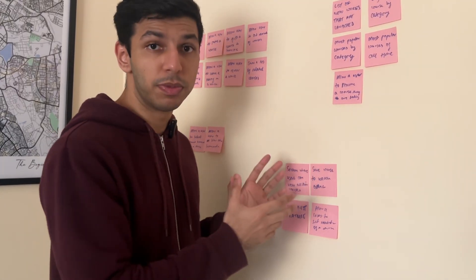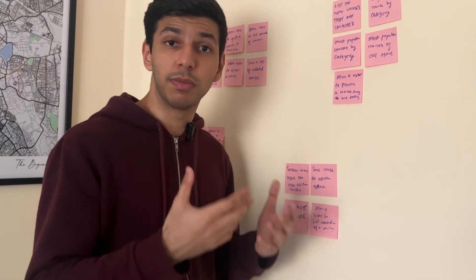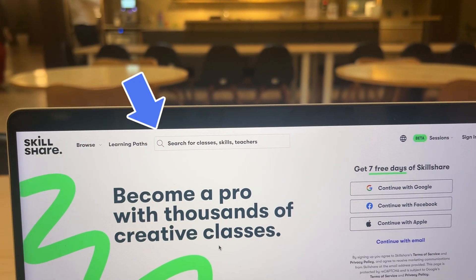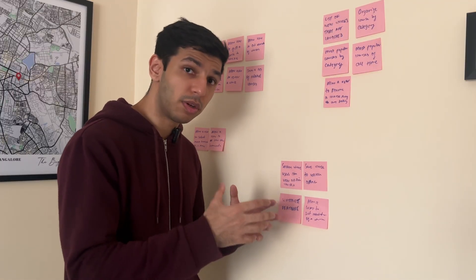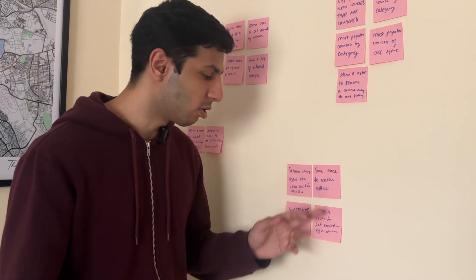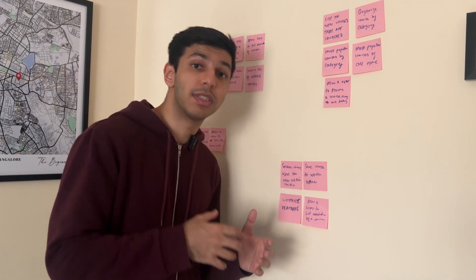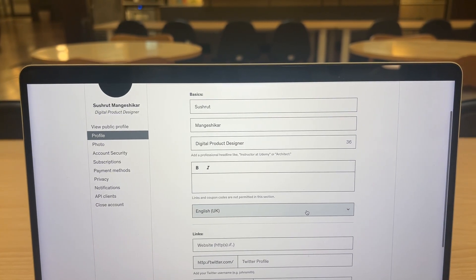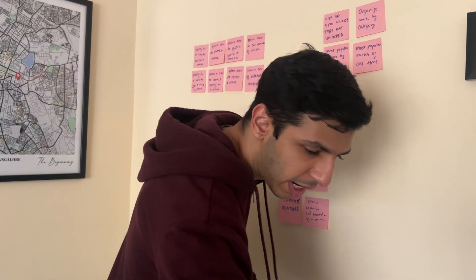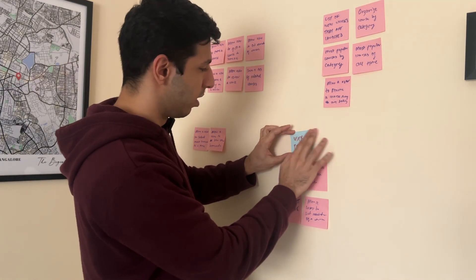Once you've grouped all the solutions into different groups, it's now time to label them. Labeling helps other stakeholders and designers understand what these different groups mean, and hopefully these labels will become the actual keyword terms used on your navigation. For instance, this group involves solutions related to a user's profile — things like 'save course to watch offline', 'allow a user to set reminders', 'watch list feature', and 'section where users can view all courses they have taken or are currently taking'. All of these are personalized to a particular user, so we take a sticky note of a different color and label this group 'user profile'.